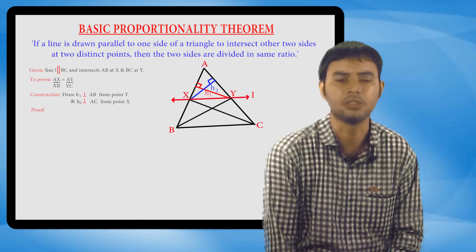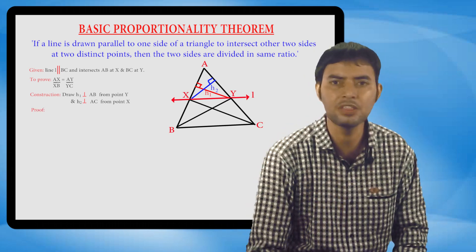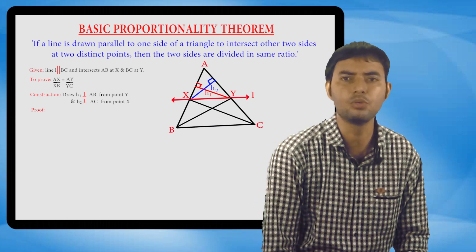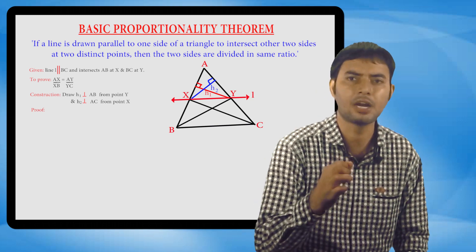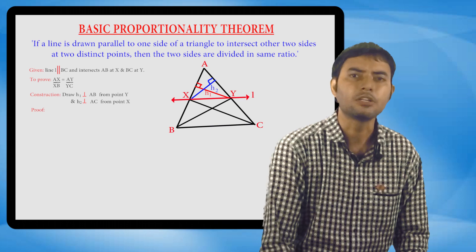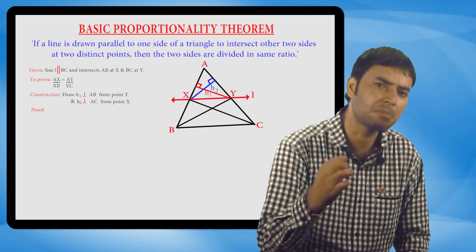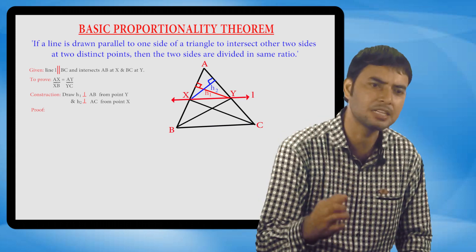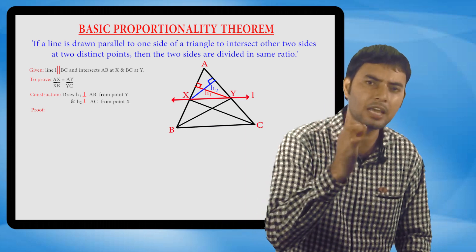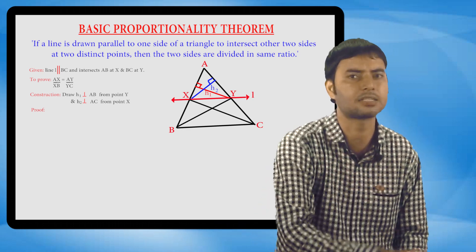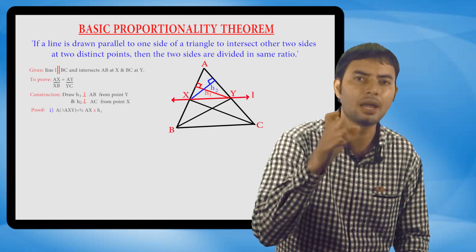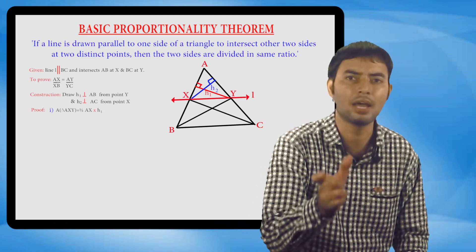For proving this theorem, first we will find out the area of triangle AXY. Area of a triangle is given by half into base into height. So area of triangle AXY, when the base is AX, is half into AX into H1.